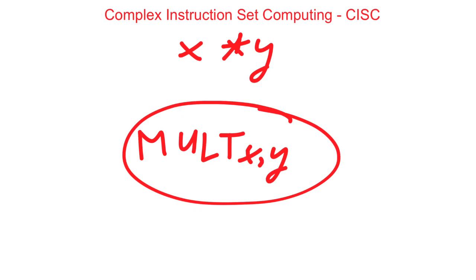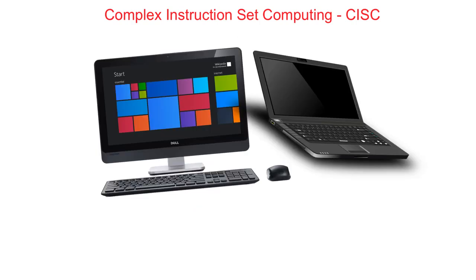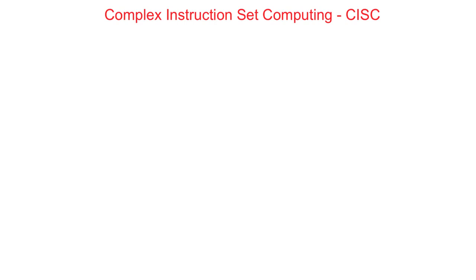The downside is that for this to be possible, the manufacturer would need to add more complex circuitry. The trade off is therefore more complex hardware is needed, but it can support simpler coding. Most desktop or laptop computers use a complex instruction set computing architecture, and they tend to be produced by companies such as Intel or AMD.